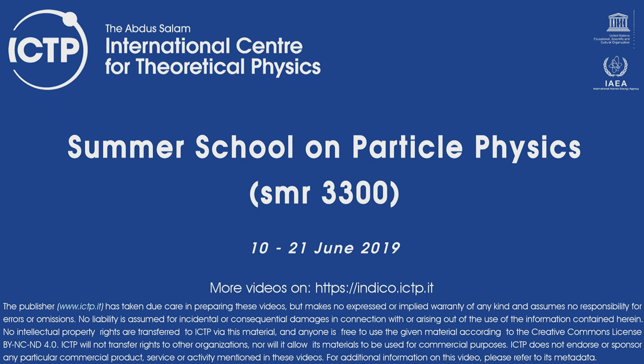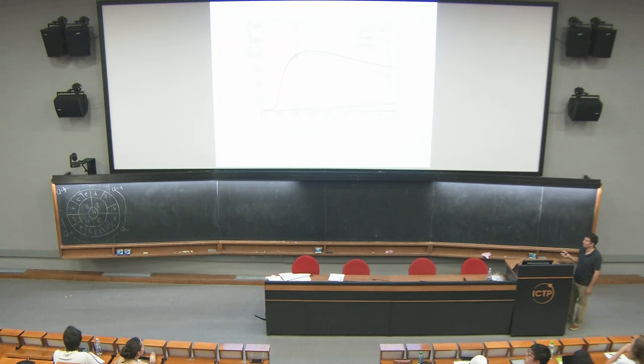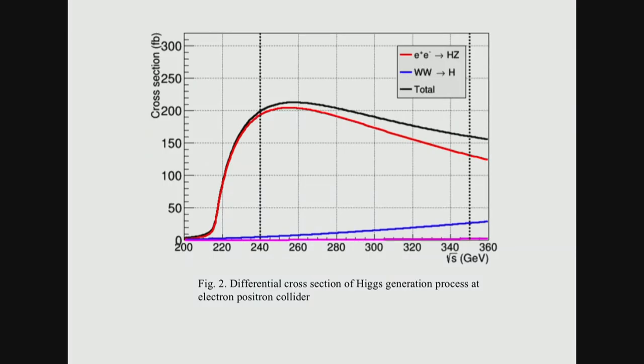Phase space saturates and then you have this slow decline in the cross-section going roughly like 1 over s, or logarithmic corrections depending on some combination of 1 over the Higgs mass or 1 over s. At high energy it goes down like 1 over s but there are logarithmic corrections as well. They're designing these machines to be near the maximum, but you want to take it as low as possible because it gets very expensive to run at higher energy, so the optimum is around 240 GeV.